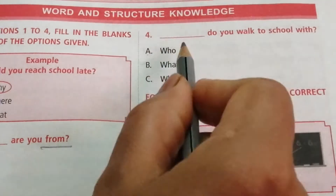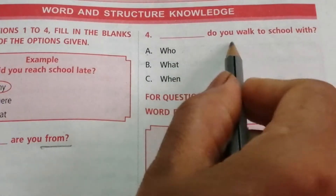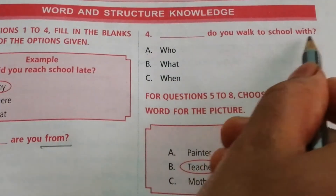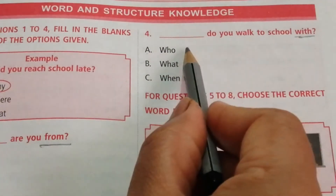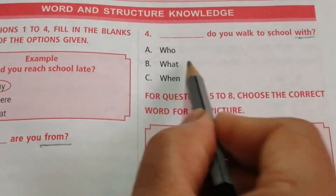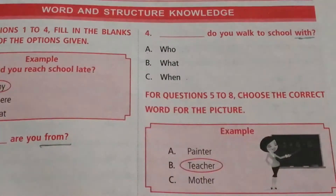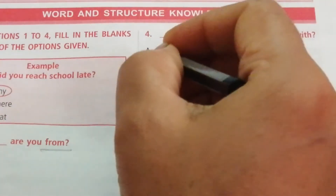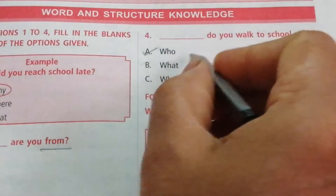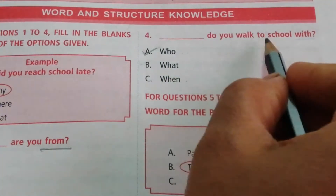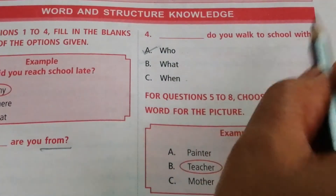Question 4: ___ do you walk to school with? 'With' is the keyword. The options are who, what, when. The answer is who. Who do you walk to school with?